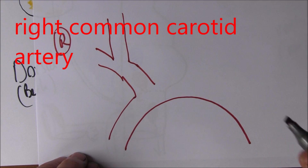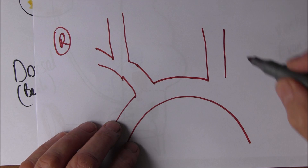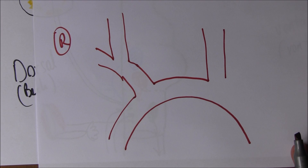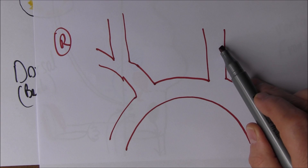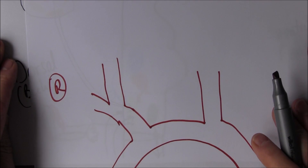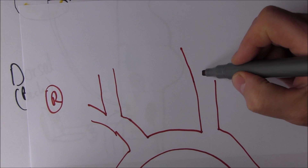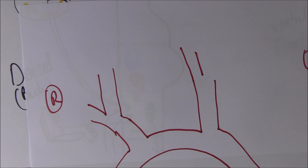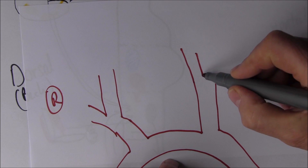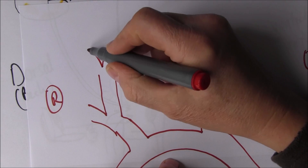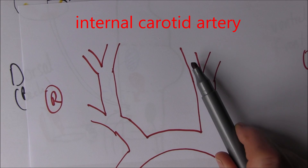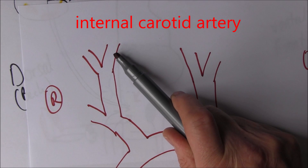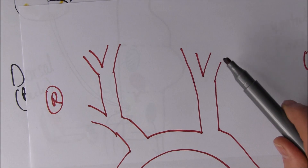We have the right common carotid artery and the left common carotid artery - these are the big arteries we can palpate in the neck. We call them 'common' because each bifurcates into two, giving us the internal and external carotid arteries on both sides.